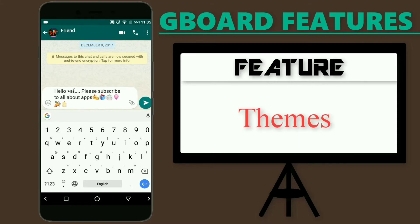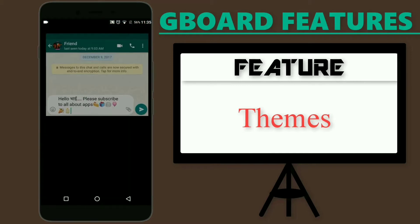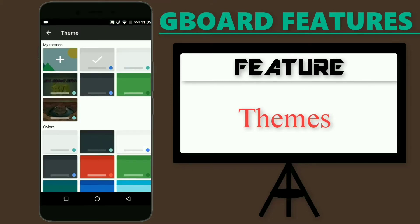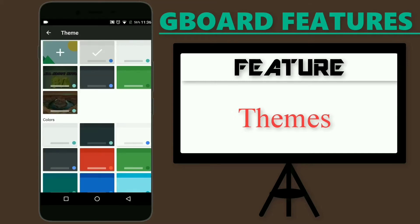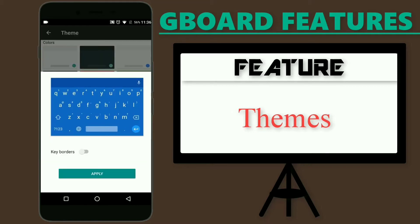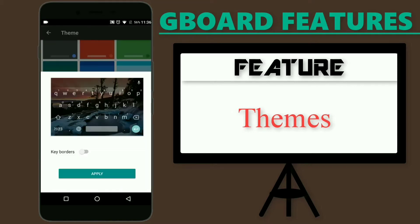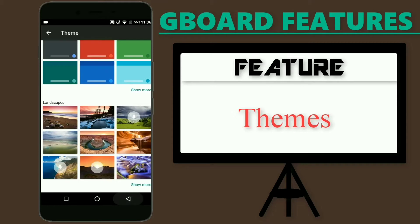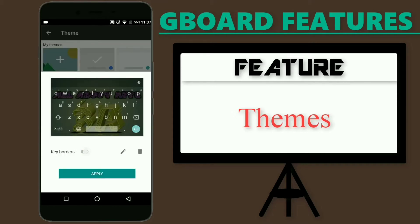You can also change the color of your keyboard — open settings and select 'Themes,' then choose the color you want. You can also choose beautiful landscape themes instead of plain colors, and if you want, you can add your own custom wallpaper by tapping on 'My Themes.'